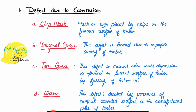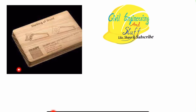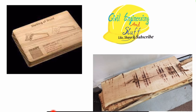Let's start with the first category: defect due to conversion. This category of defect occurs when we mishandle the equipment used for timber processing. The first type of defect is the chip mark. Chip mark is a defect caused when we mishandle the equipment and, when we intend to place some mark or sign, because of the mishandling the surface of the timber gets destroyed. Suppose this is a timber surface and we want to place some marking, but we mishandle the equipment and the surface of the timber gets burned or defected — this type of defect is called chip mark.